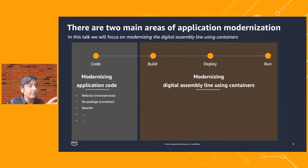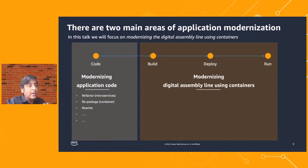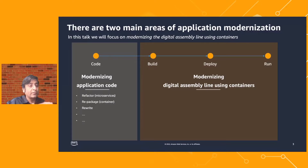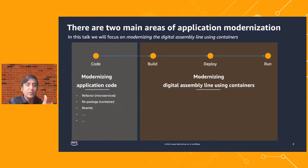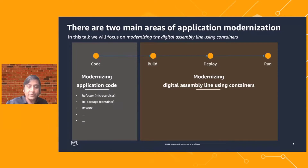The modern digital assembly line uses a lot of automation, which leads to operational efficiency. It also improves reliability and security by reducing the human error factor. Automation improves standardization, improves the security posture, and improves the reliability of applications. That's why it's important to modernize the digital assembly line as well, and that's what we're going to focus on for this talk.